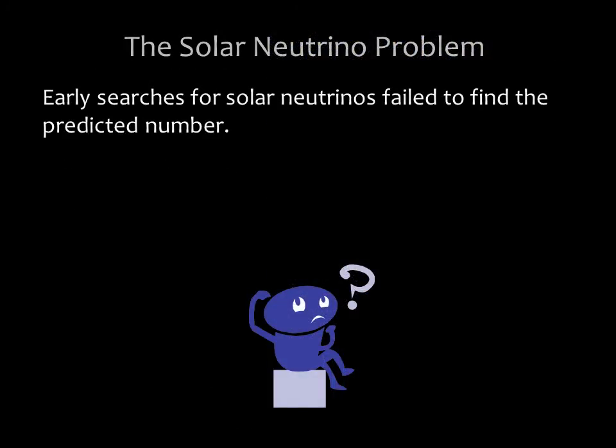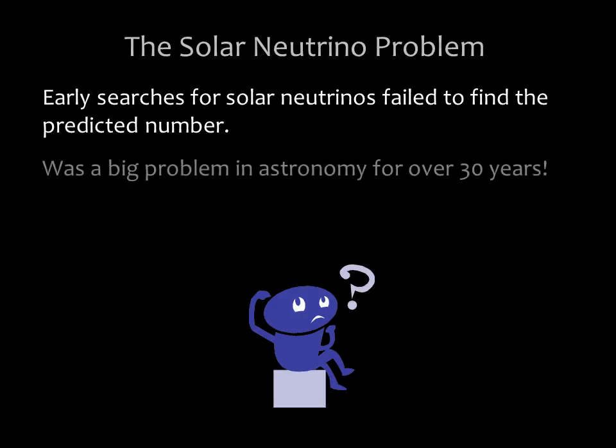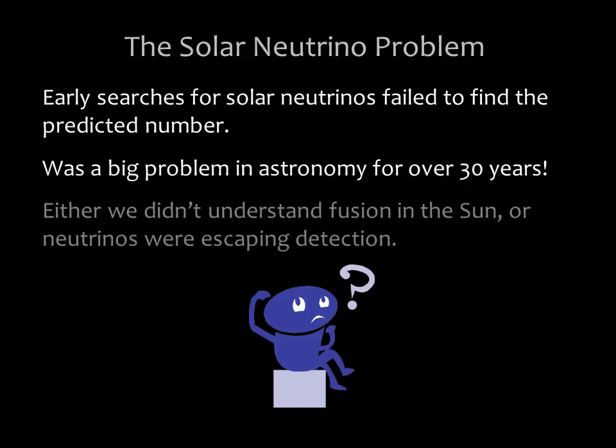Early attempts to detect solar neutrinos were only partially successful, capturing only one-third of the number predicted by models of nuclear fusion in the sun's core. This disagreement between the model predictions and actual observations came to be called the solar neutrino problem. For more than 30 years, the solar neutrino problem was one of the great mysteries in astronomy. Either something was wrong with our understanding of fusion in the sun, or some of the sun's neutrinos were somehow escaping detection.